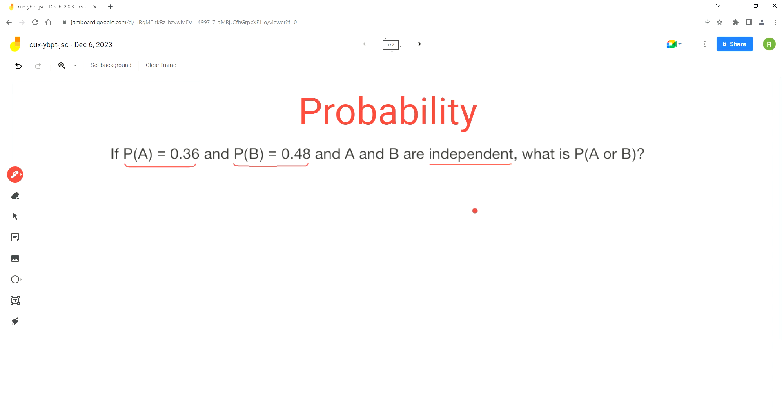That means the probability of event A happening doesn't affect the probability of B. So that's what independent events mean, that they don't affect each other's probability. And we have to find what is the probability that either A or B happens.